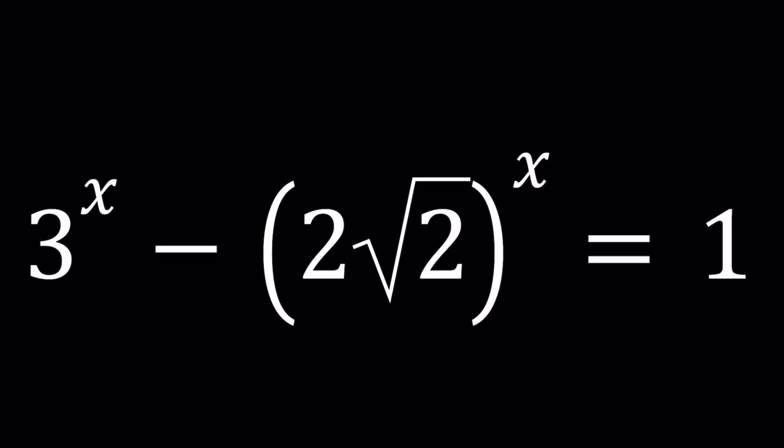Hello everyone. In this video we're going to be solving an interesting exponential equation: 3 to the power x minus 2 root 2 to the power x equals 1, and we're going to be solving for x values. We're going to be approaching this from two different angles, even though those methods are pretty similar. Let's go ahead and start with the first method.